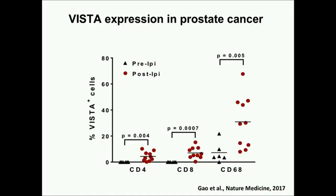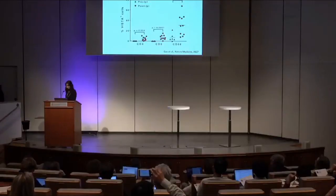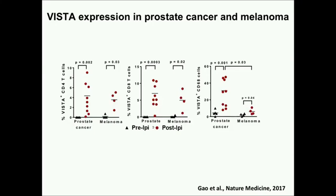VISTA is a novel pathway. We looked at VISTA expression in T cells and macrophages, co-localization of how VISTA protein is expressed. In the pretreatment samples versus post-treatment, you can see increased expression on macrophages — these CD68 cells — with some on T cells as well. Prostate cancer does not respond as well to immunotherapy as melanoma, for example. So we compared prostate cancer samples to melanoma samples, and this was definitely something different just in the prostate cancer patients compared to melanoma.